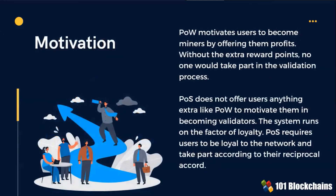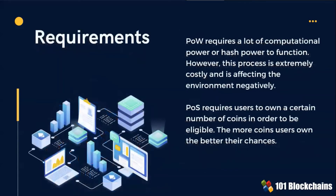Regarding motivation: Proof-of-Work motivates users to become miners by offering them profits. Proof-of-Stake requires users to be loyal to the network and take part according to their reciprocal agreement. Regarding requirements: Proof-of-Work requires a lot of computational power or hash power to function. Proof-of-Stake requires users to own a certain number of coins in order to be eligible.